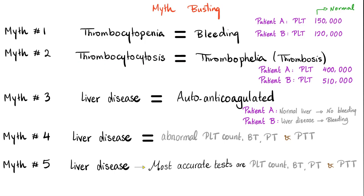Myth two: thrombocytosis means increased risk of thrombosis. If patient A has a platelet count of 400,000 and patient B has 510,000, therefore patient B is more likely to thrombose — what a load of trash. There is a difference between thrombocytosis, which is increased platelet count, and thrombophilia, which is thrombosis. These are not the same. In fact, most patients with high platelet count are absolutely fine.